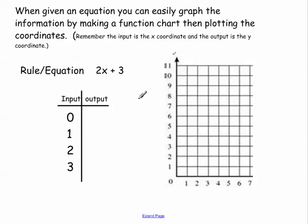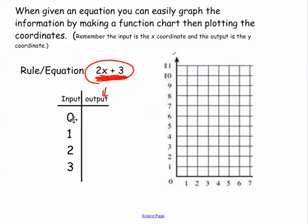Here is another graph. Let's do this one, and then I'm going to let you do some on your own. Here's my rule: 2x plus 3. So I have to use this rule in order to come up with my outputs. Here's my input values or my x's, so I'm going to plug these in for x. 2 times 0 would be 0 plus 3, giving me 3. 1 times 2 is 2 plus 3 is 4. 2 times 2 is 4 plus 3 is 7. And 3 times 2 is 6 plus 3 is 9.